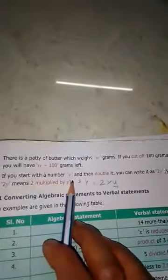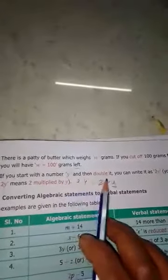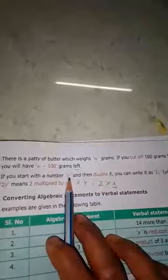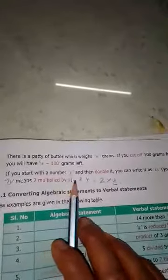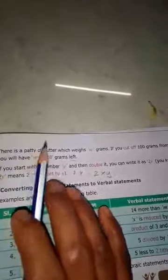If you start with the number y and then double it, you write it as 2y. Double means 2, so 2y. This is the situation of framing algebraic statements.